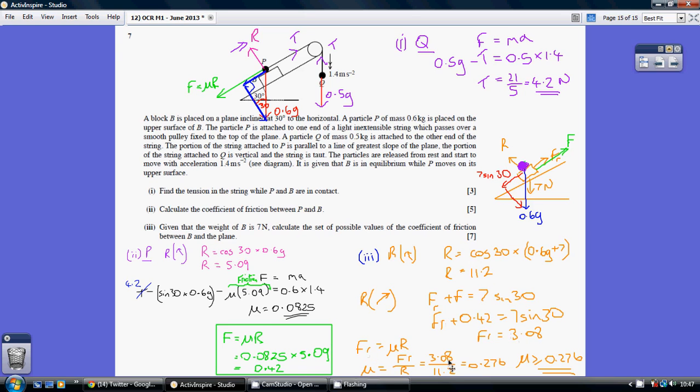And therefore given that we know we can also work out the normal reaction, I should have mentioned that first, the normal reaction here resolving this direction, we've got R equaling 0.6G cos 30, so we know R is 11.2.